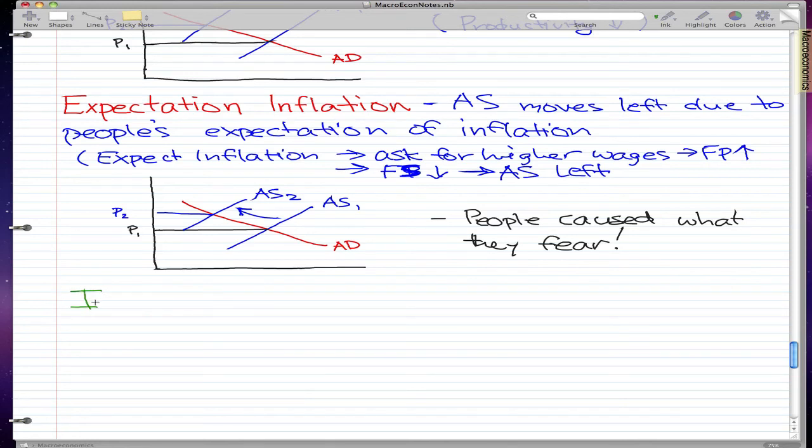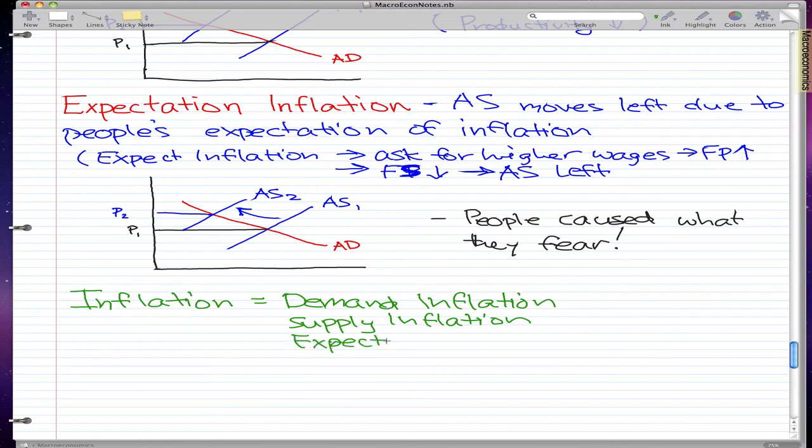Now I'm going to give you the formula for inflation. The general formula for inflation is we add all the types of inflation that we just went through. So we take demand inflation, plus supply inflation, plus expectation inflation.